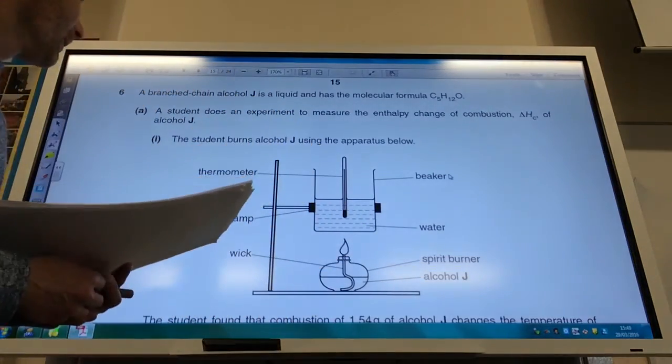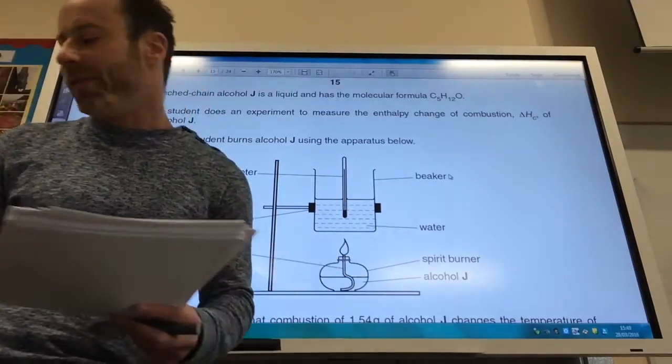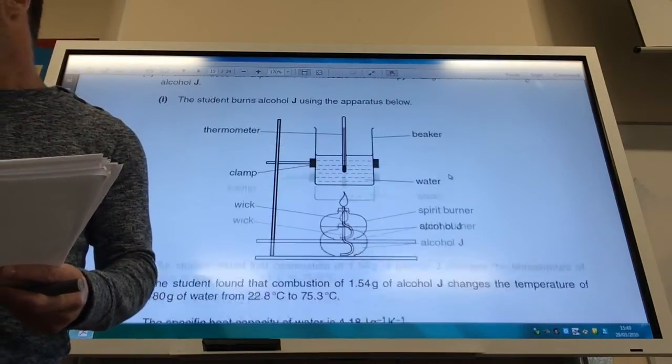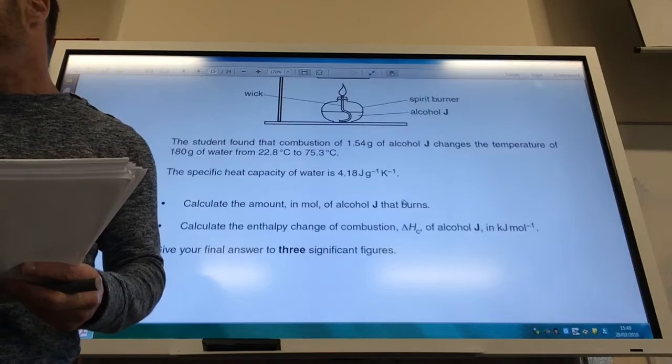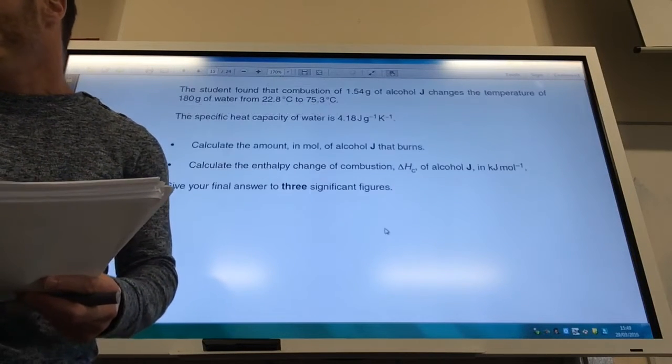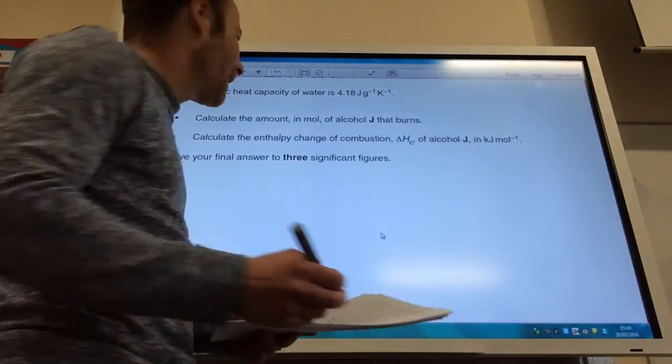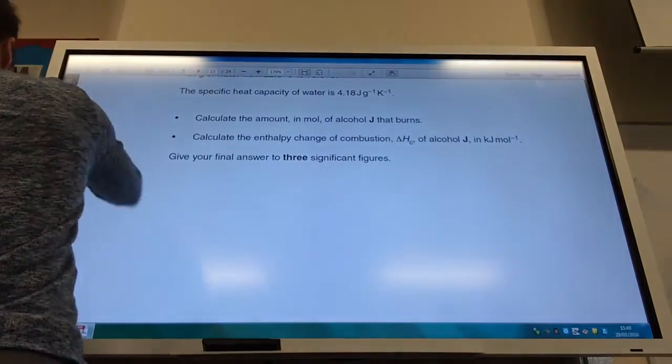Alright, okay, so we've got a calculation coming up. Branched chain alcohol C5H12O, got a nice experiment there. A student found combustion of 1.54 grams of the alcohol changed the temperature. Calculate the amount in moles of alcohol J that burns.